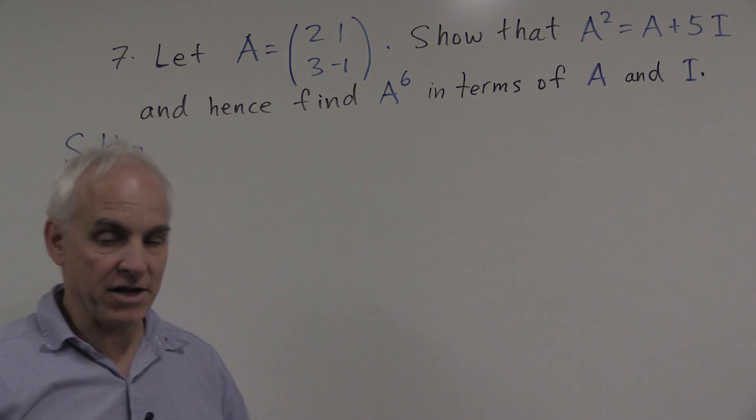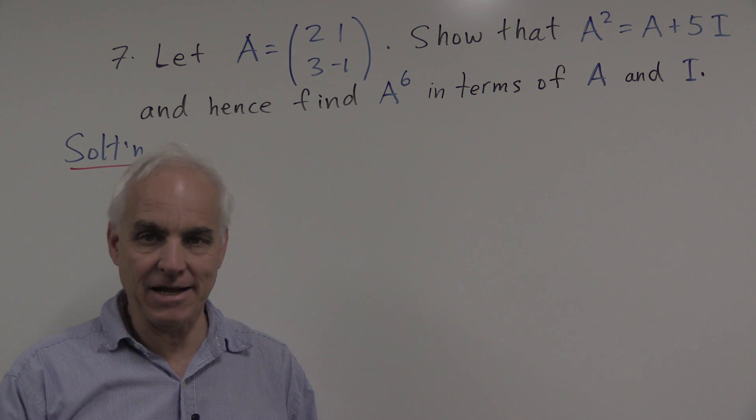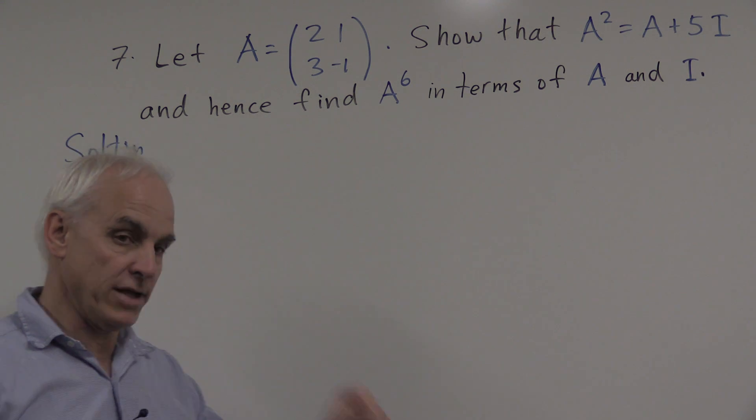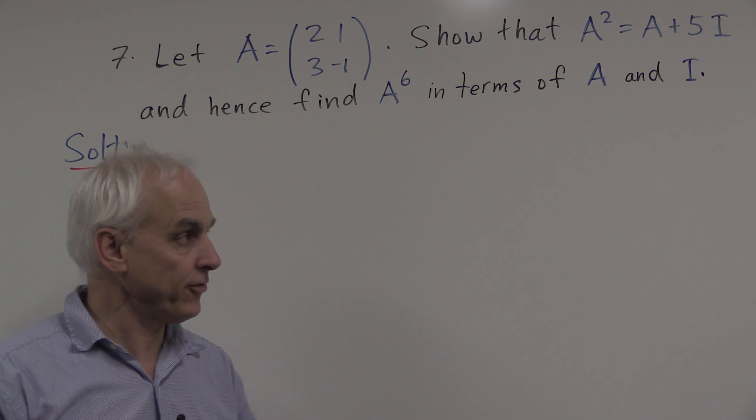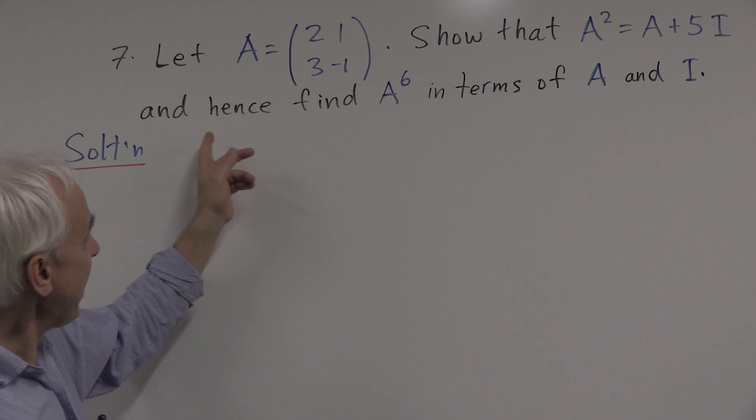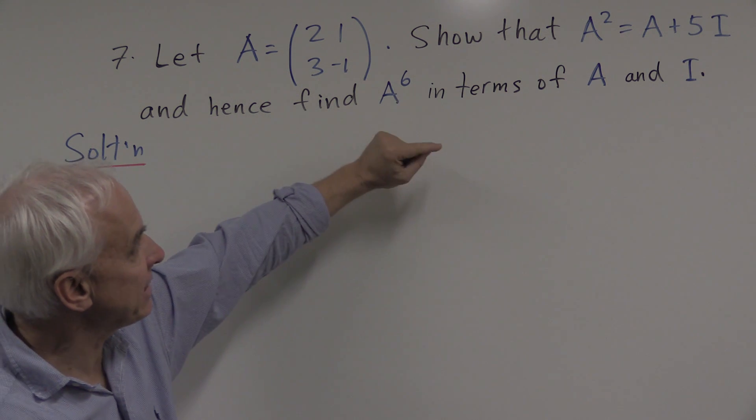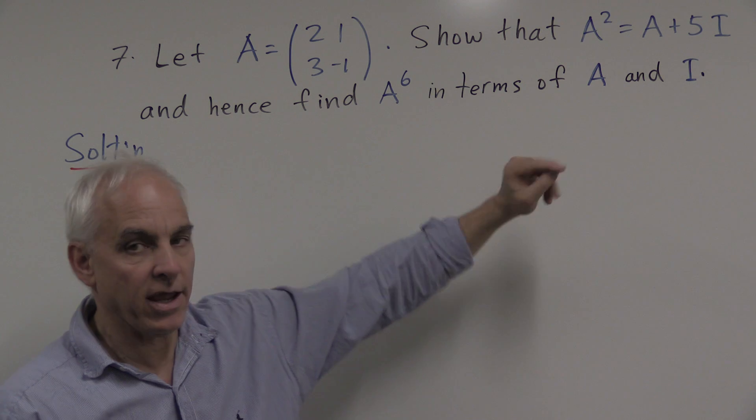In matrix problems, I always means the appropriate identity matrix, which is ones down the diagonal and zeros everywhere else. And then hence find A to the sixth in terms of A and I.